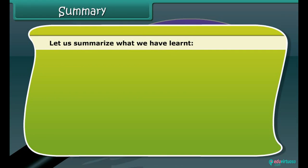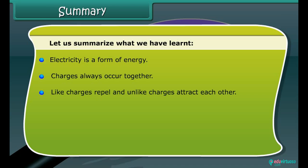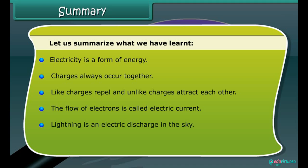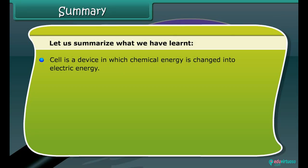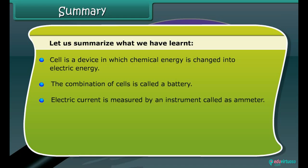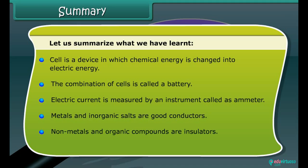Let us summarize what we have learned. Electricity is a form of energy. Charges always occur together. Like charges repel and unlike charges attract each other. The flow of electrons is called electric current. Lightning is an electric discharge in the sky. Cells are sources of electric current. A cell is a device in which chemical energy is changed into electric energy. The combination of cells is called a battery. Electric current is measured by an instrument called an ammeter. Metals and inorganic salts are good conductors. Non-metals and organic compounds are insulators.